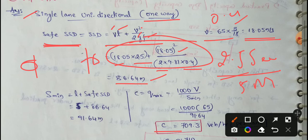S minimum value is easy to measure. S minimum means minimum space headway. Minimum space headway equal to L plus safe SSD. L means length of vehicle. Length of vehicle is 5 m plus safe SSD 86.64 m. Total the net is 91.64 m. This is minimum space headway value, 91.64 m.